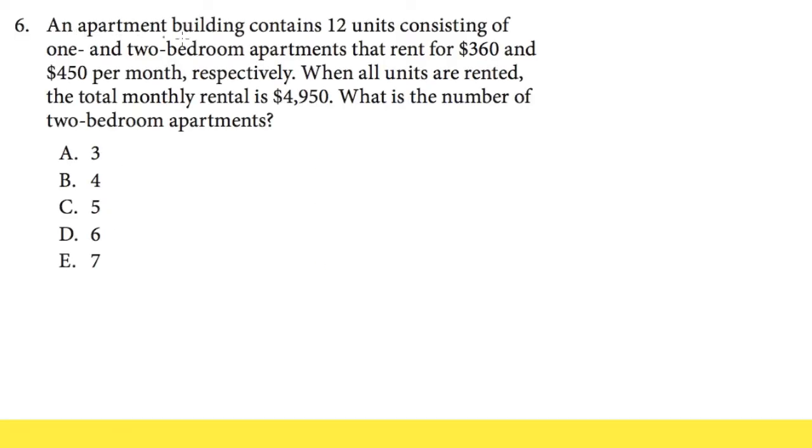For number six, it says an apartment building contains 12 units consisting of one and two bedroom apartments that rent for $360 and $450 per month, respectively. This word means that the one bedroom apartment will cost $360 per month and the two bedroom apartment will cost $450 per month. When all the units are rented, the total monthly rental is $4,950, and we are trying to find out the number of two bedroom apartments.